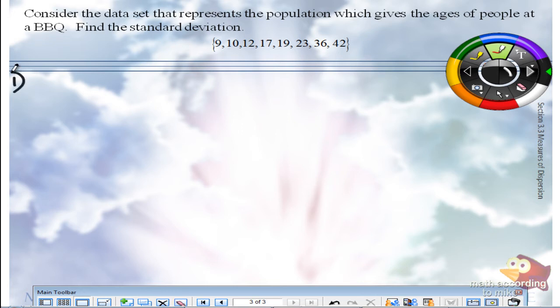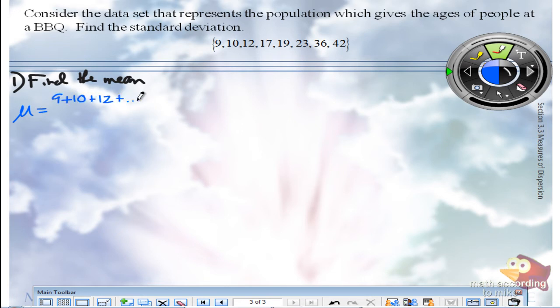Step one, find the mean. Since this is a population mean, what's the symbol I use? Mu. And so I'll just do 9 plus 10 plus 12 plus dot dot dot plus 42, all over how many total people we have. I got 8. What's the average age of the people at the barbecue? 21.